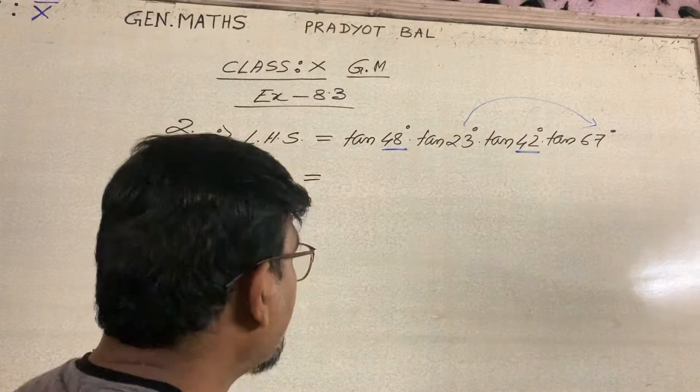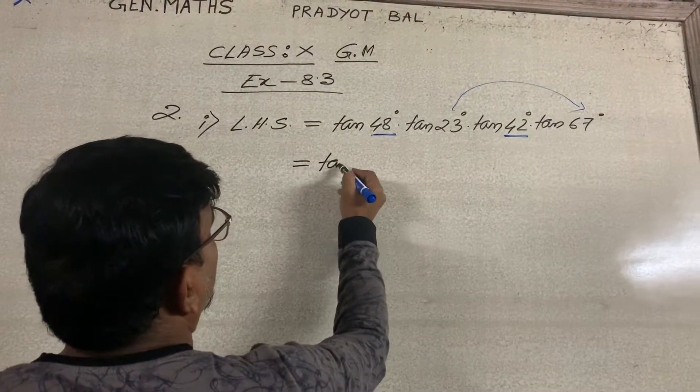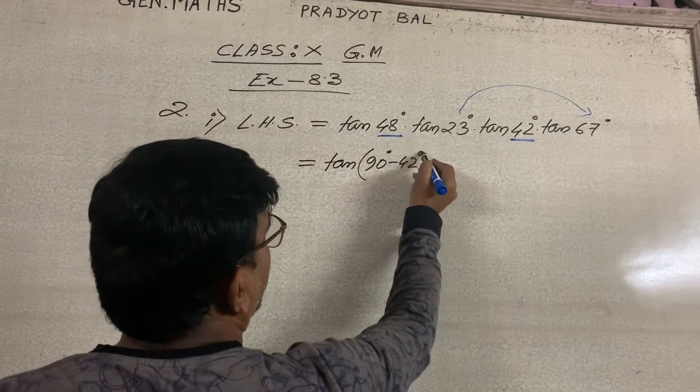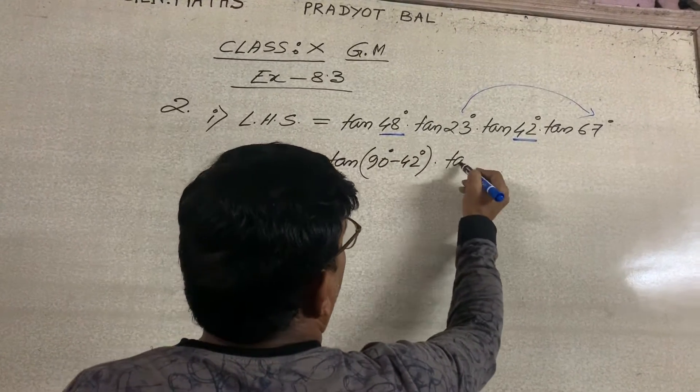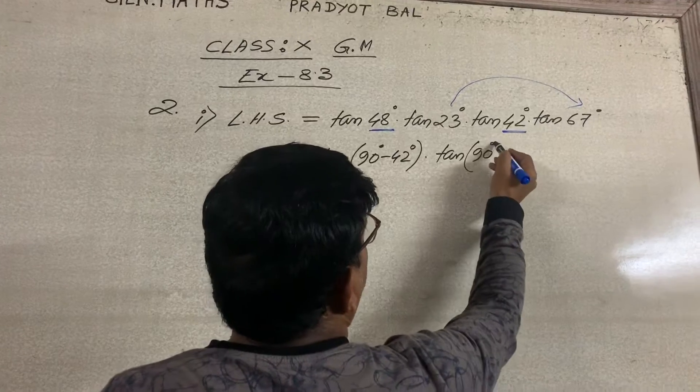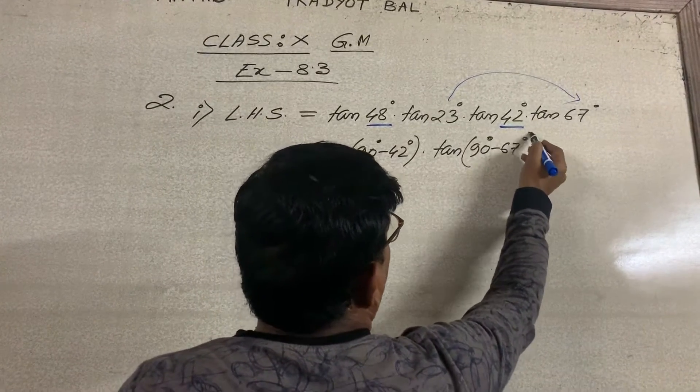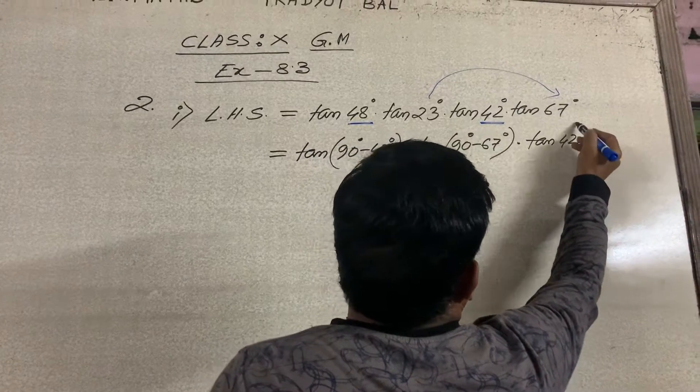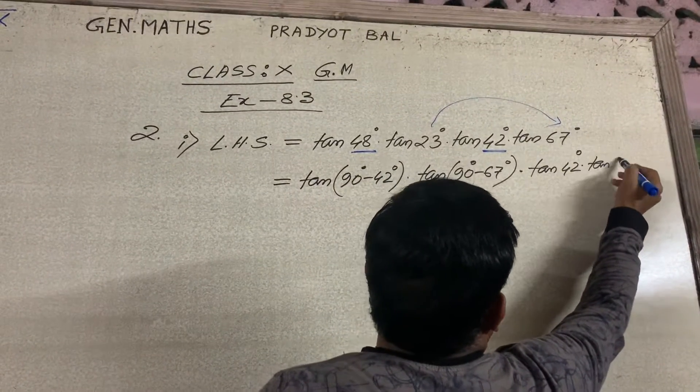We are just proceeding in the same way. I am writing here tan 48 degree as 90 degree minus 42 degree, then tan 23 degree as 90 degree minus 67 degree. But the rest two, we are keeping just same: tan 42 degree, tan 67 degree.